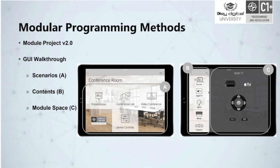In order to fully understand the module version 2.0 GUI, Graphic User Interface, it is very simple. It's 1, 2, 3 — or ABC as we have it here: Scenarios, Contents, and the module space. Take a look at these images here: A, Scenarios; B, Contents; and C, the module space.